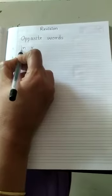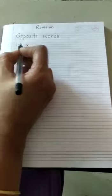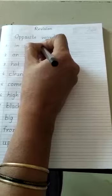See here, first one is I N in. What is the opposite word for in? Out. O U T. Out.